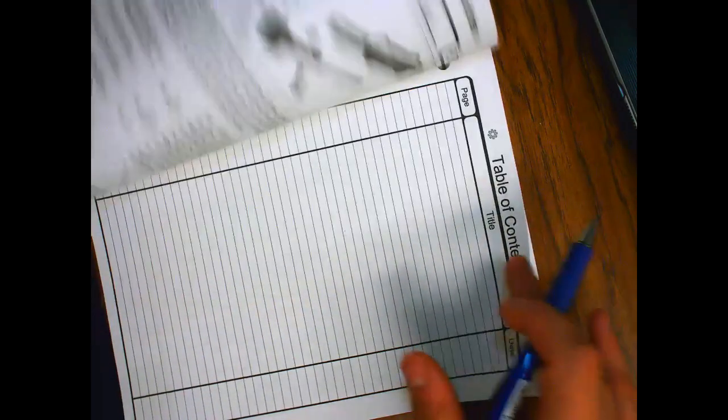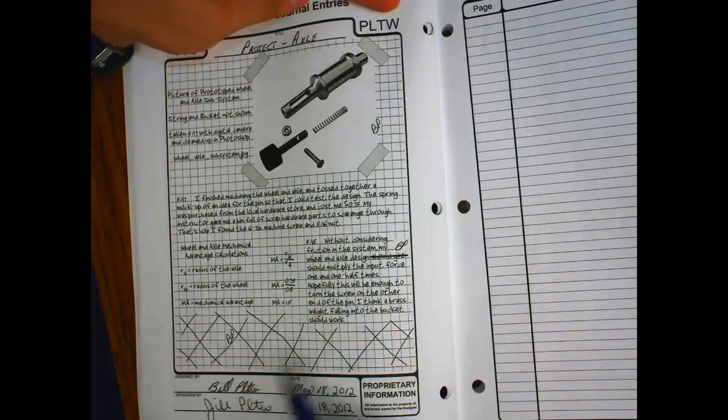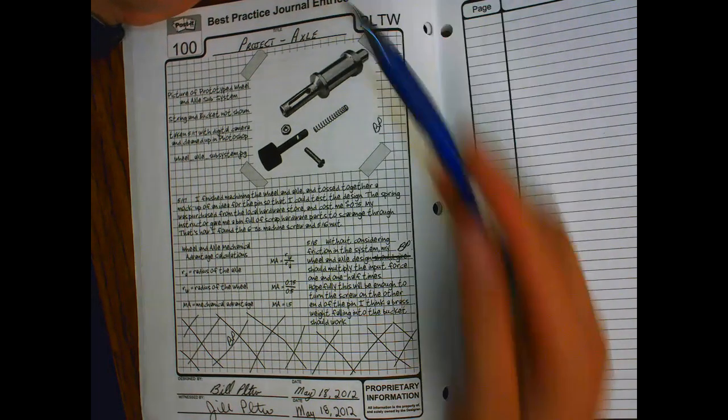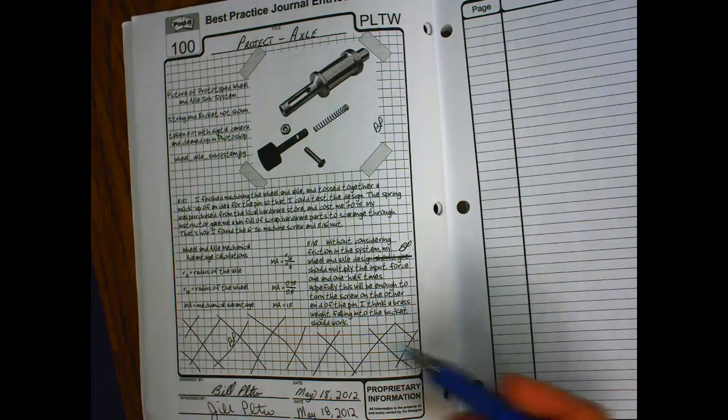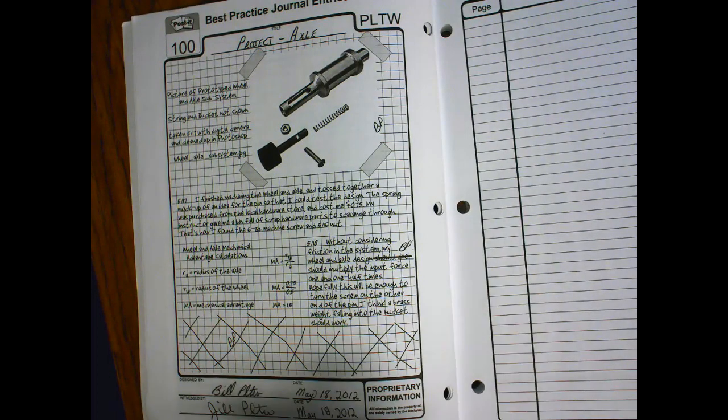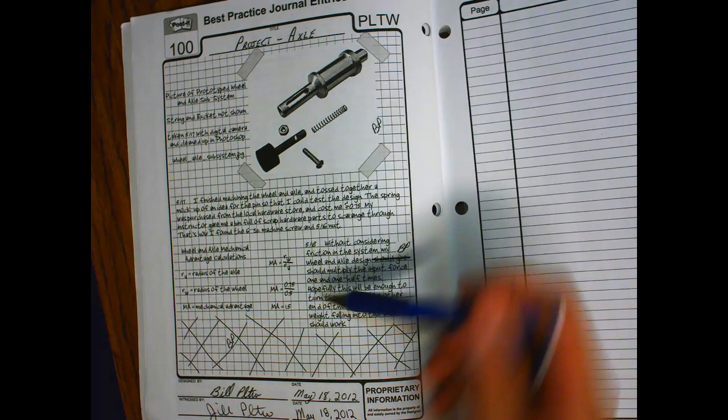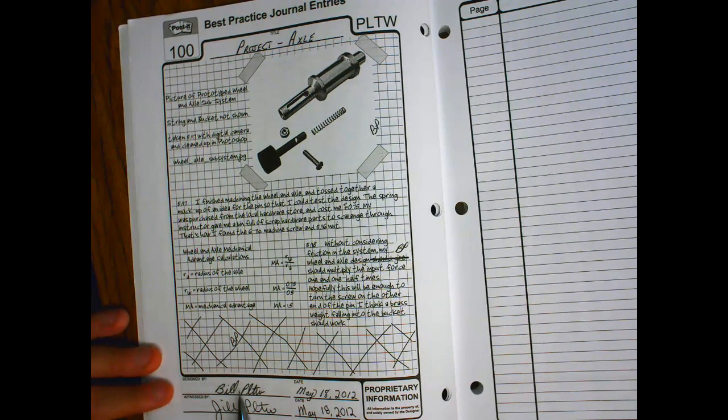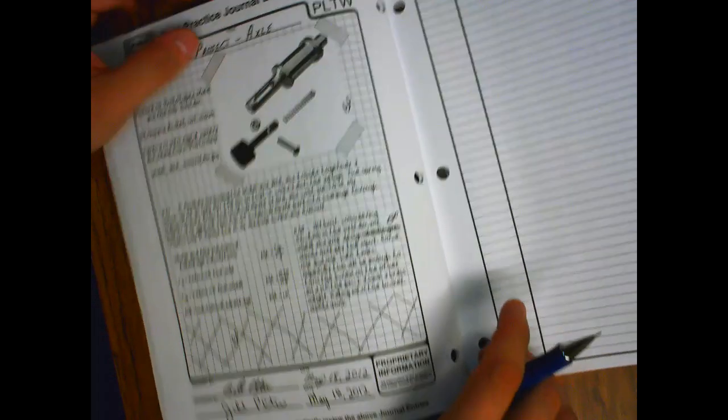If there's some blank space, you see there's some examples right here where they've actually x'ed it out, they've crossed it out. You see there's X's, but also down at the bottom it says designed by, witnessed by, and then the date. This is very important anytime you're designing something.